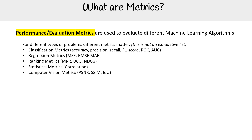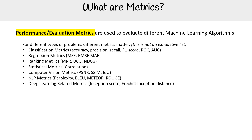For statistical metrics, we have correlation. For computer vision metrics, we have PSNR, SSIM, and IOU. For NLP metrics, we have perplexity, BLEU, METEOR, and ROUGE. For deep learning related metrics, we have inception score and Fréchet inception distance.